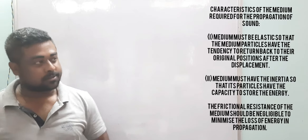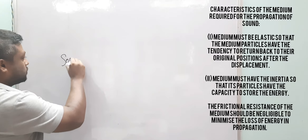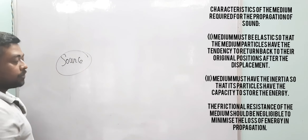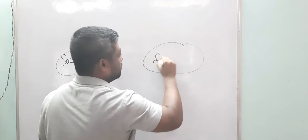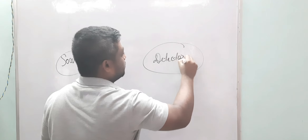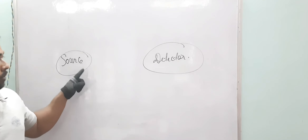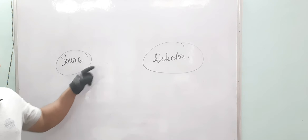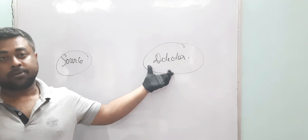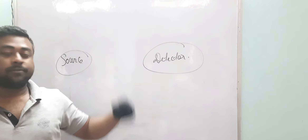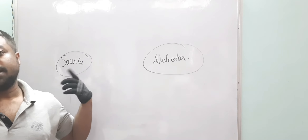Basically we need two things: a source which will create the sound, and a detector which will detect the sound. Without a detector you cannot define it as sound, because we have ears and we act as detectors.